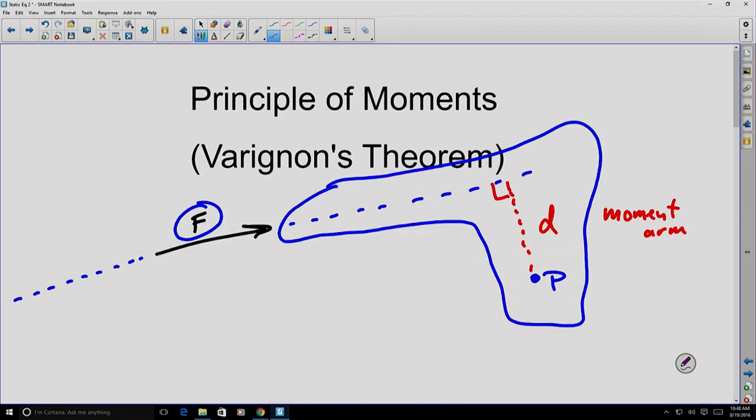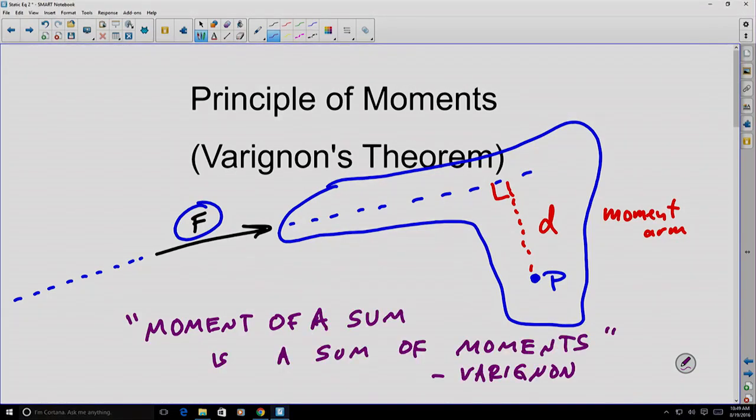So what Varignon basically says is the following, that the moment of a sum is the sum of the moments. Now this is basically paraphrasing, but let's see if we can discuss what that means.